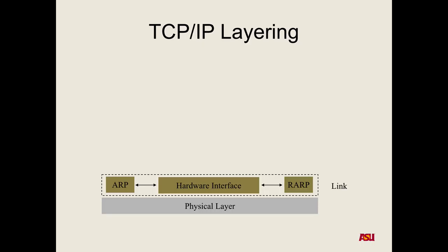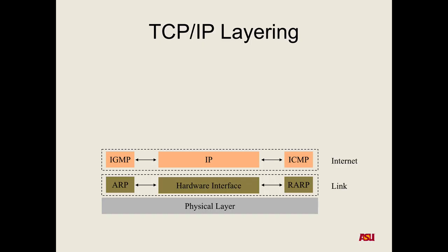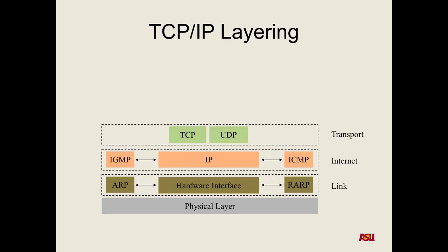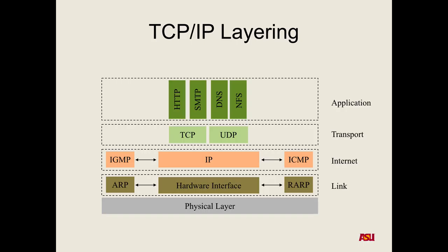Above that we have different things to make the link level work — how your hardware network card actually talks to other things on its network. Above that we have the internet layer where we have IP. Above that, two different transport layer protocols: TCP and UDP. And finally above that, we get all the applications we know and love. HTTP is web. What's SMTP? Email — Simple Mail Transport Protocol. And we also have DNS.